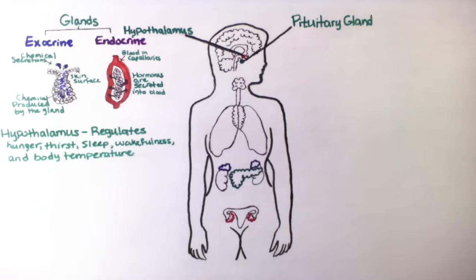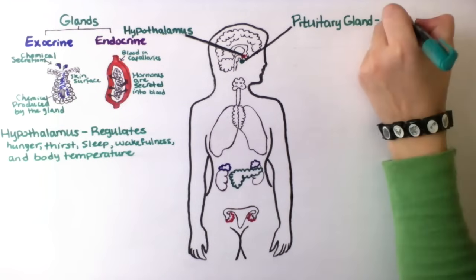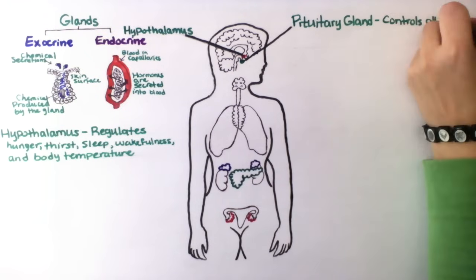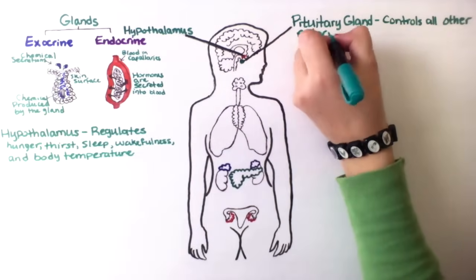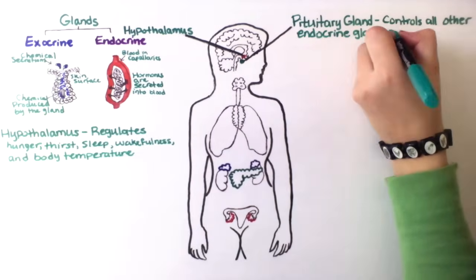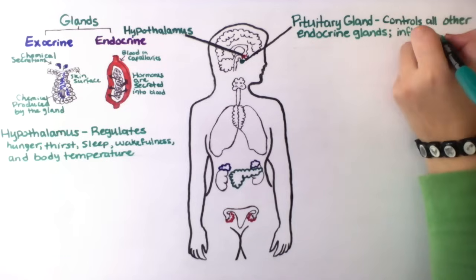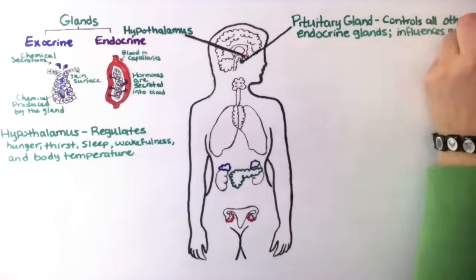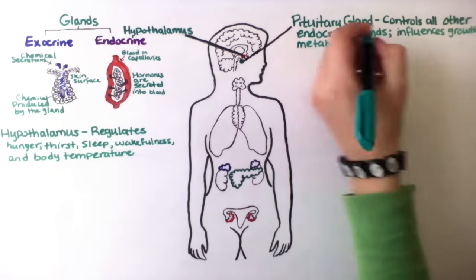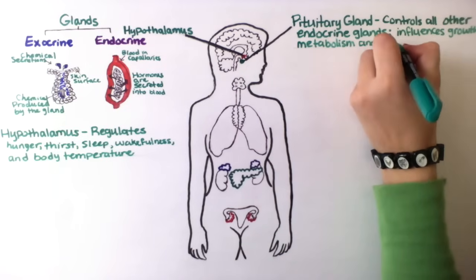The pituitary gland controls all other endocrine glands and it influences growth, metabolism, and regeneration.